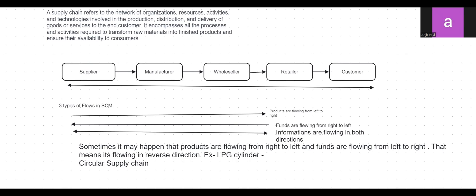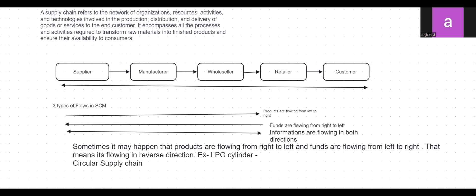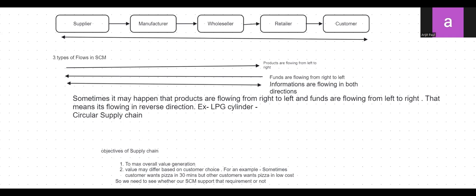Sometimes products can flow from right to left and funds from left to right — that is, in the reverse direction. An example is the LPG cylinder, which can also be referred to as a circular supply chain. In a circular supply chain, we give our empty cylinder to the agent and take back a filled cylinder. We are giving something and taking back something, which is the concept of a circular supply chain.